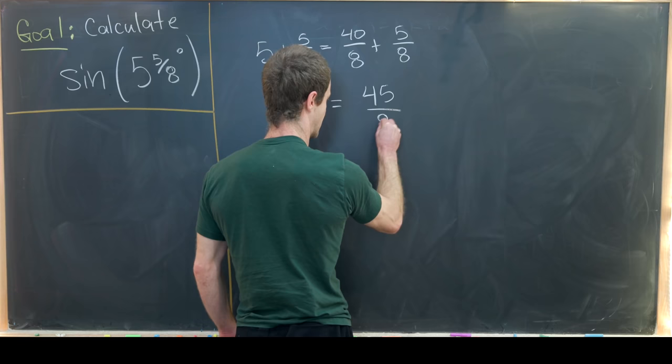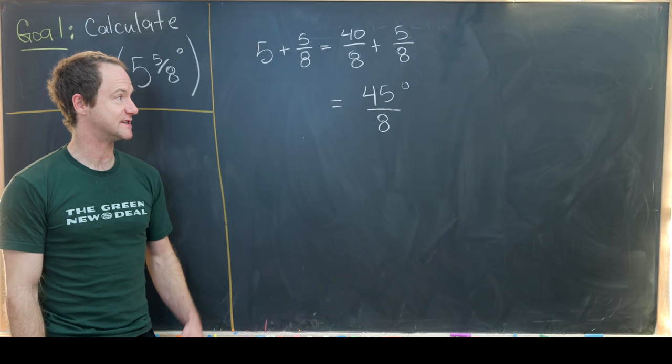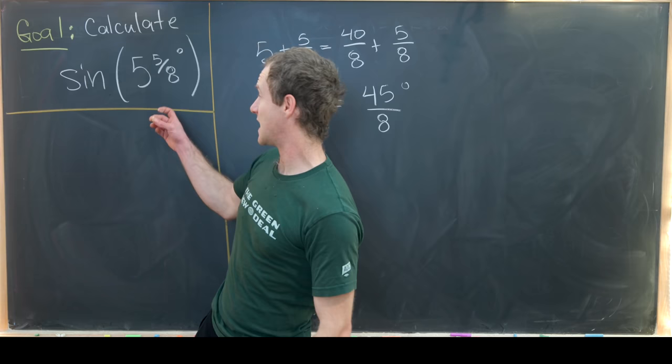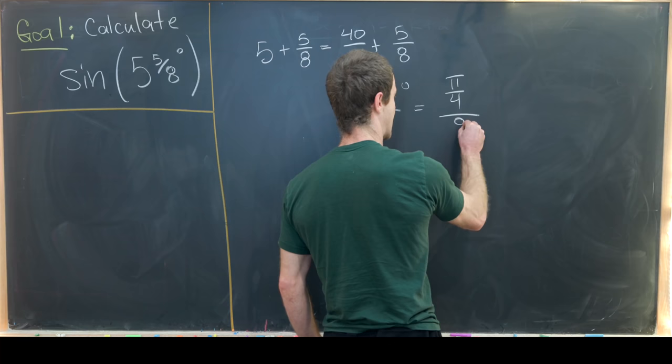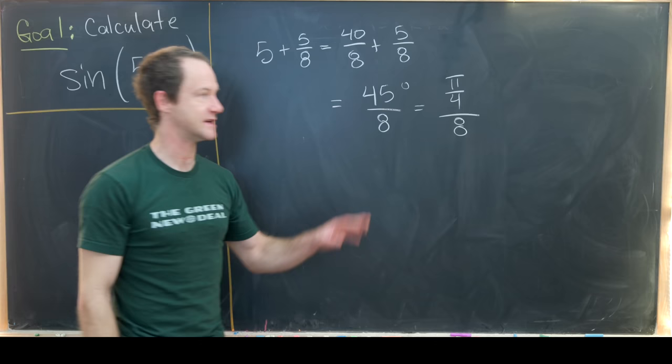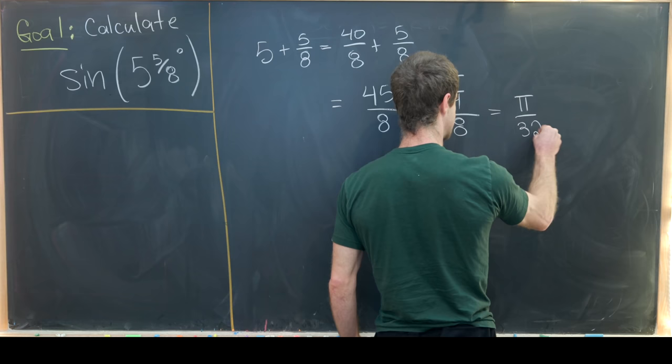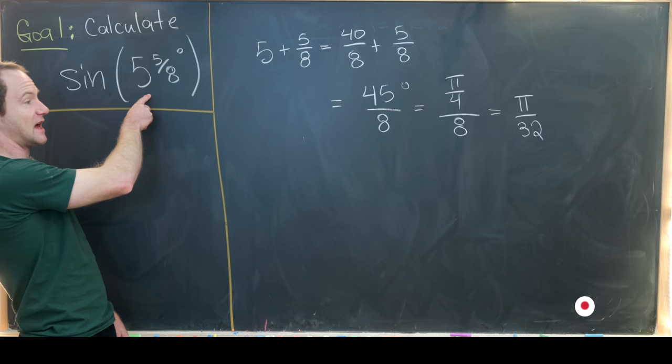Luckily, 45 degrees is easy to translate into radians, and the sine and cosine of 45 degrees are well known. So 45 degrees is pi over 4 radians, and dividing by 8 gives us pi over 4 over 8, which simplifies to pi over 32. So we want to calculate sine of pi over 32.